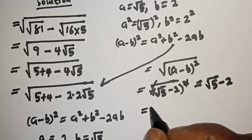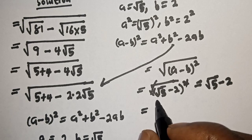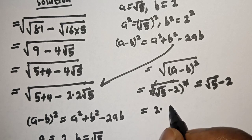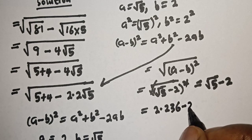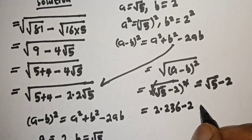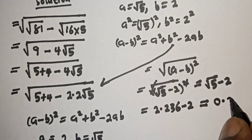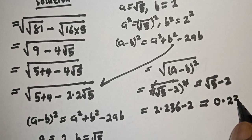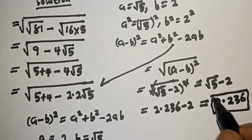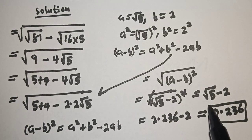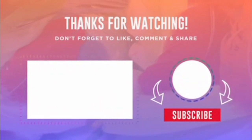And this is equal to square root of 5 minus 2, and this is the final answer. If you enjoyed the class, please do not forget to like, share, comment, and subscribe. Thank you.